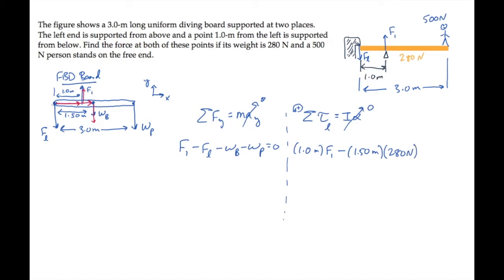The last torque is due to the weight of the person standing on the end of the board. Here's its moment arm. The force itself is directed down, so that torque is also negative. With a moment arm of 3 meters, and a magnitude of force of 500 Newtons.